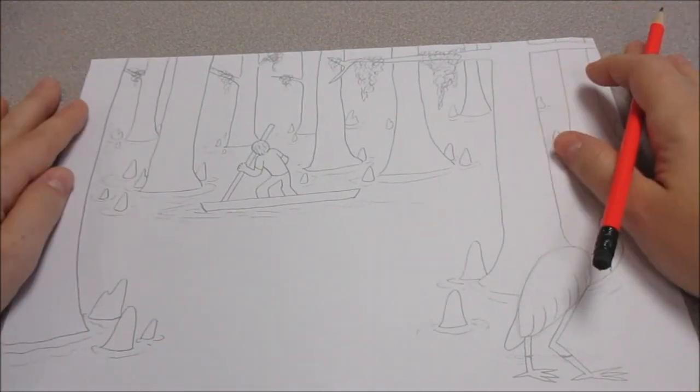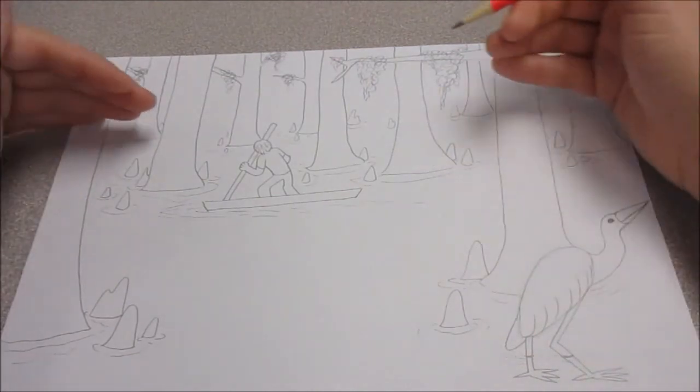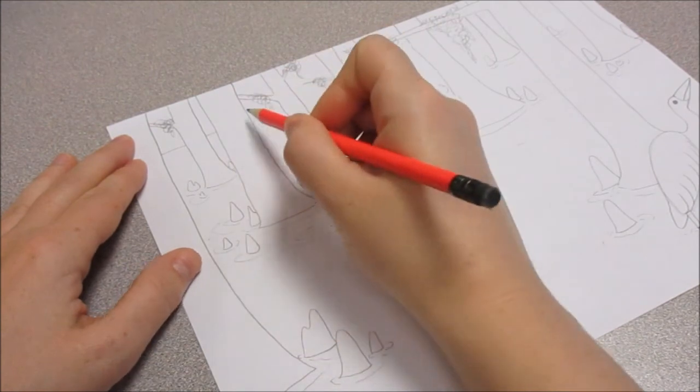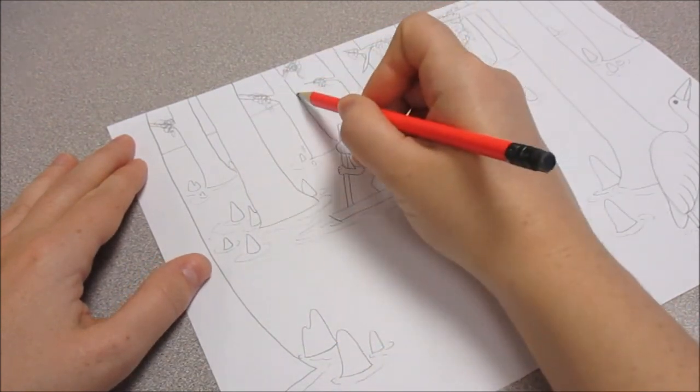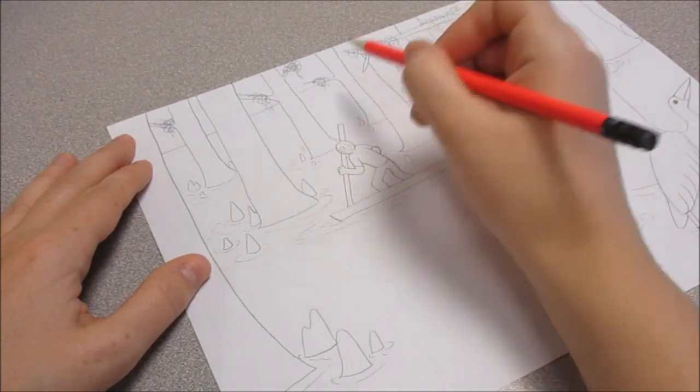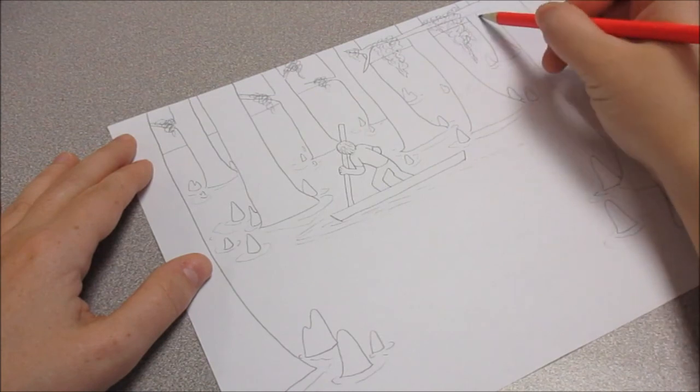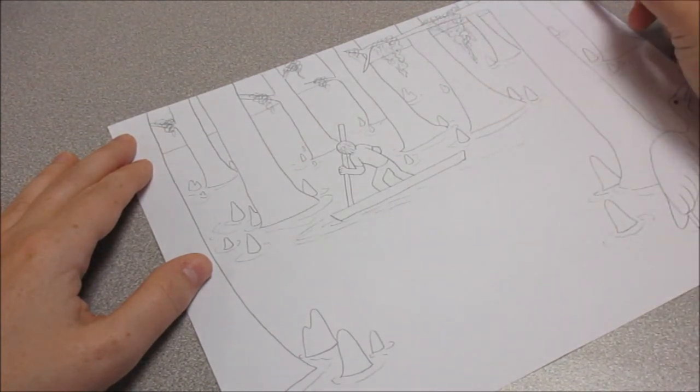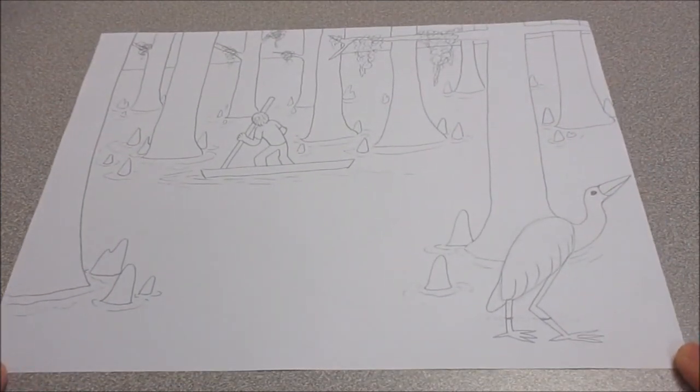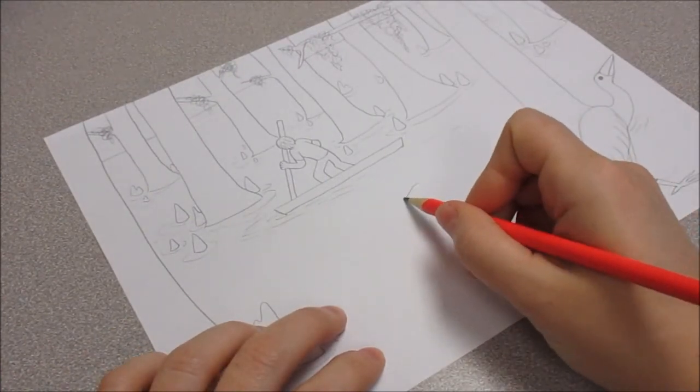My last thing to make this picture look good is to just add a line in the background to show where the water is stopping. And the sky is starting. Make sure you're looking at where your trees are when you're drawing this rising line. And you know what, just for fun, I'm gonna put a little alligator peek in.